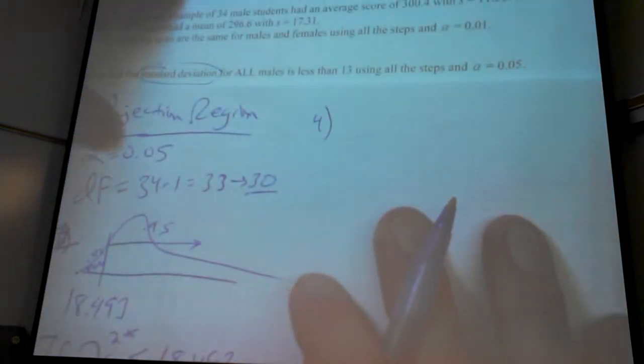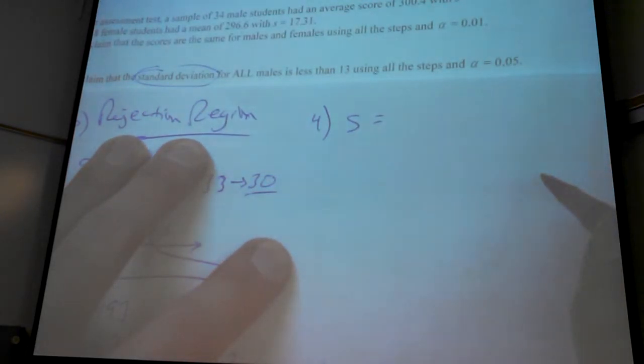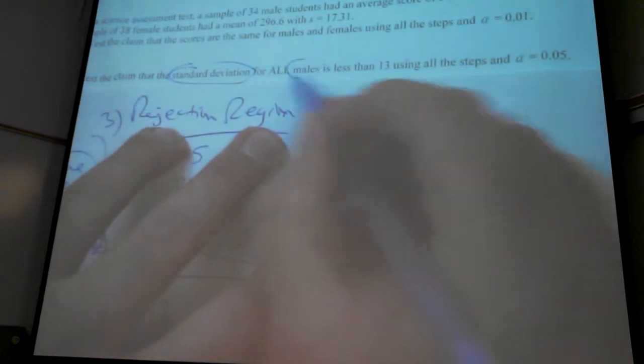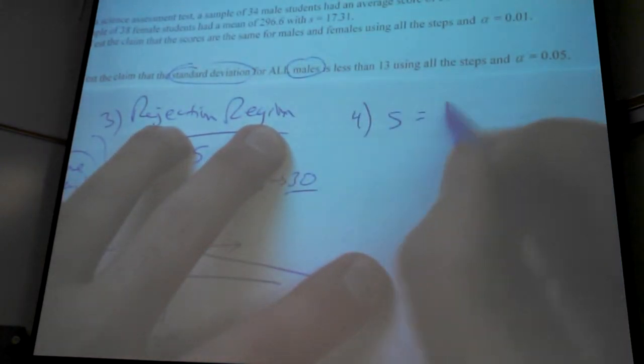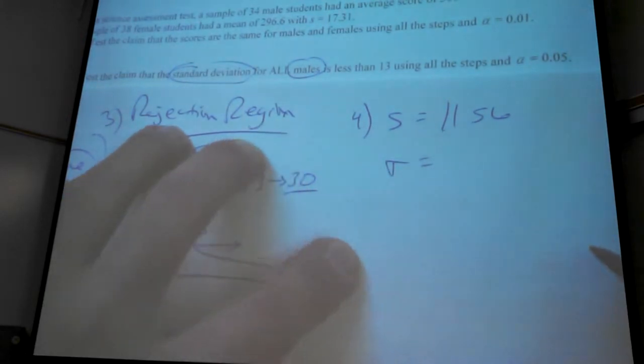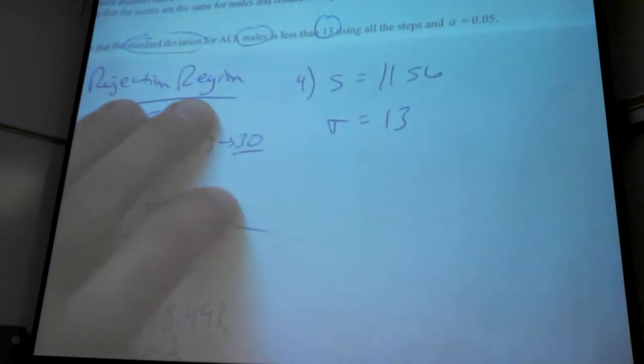...the standard deviation that we saw was 17.31. That's for women. 11.56. This is all of them, men. 11.56. And the sigma, I'm assuming it to be 13. Because that's the one from our claim. 13.